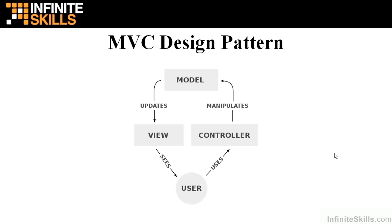This is the classic diagram of an MVC design pattern. The user sees a view and interacts with it in some way, and the user requests go into the controller, which calls the model data and manipulates it in some way, and creates an update to the model, which gets passed through to the view, and the user sees the new view.